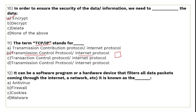A firewall can be a software program or a hardware device that filters all data packets coming through the internet. It checks all incoming data and ensures there is no suspicious data, malware, etc. You can install a firewall as a software program or as a hardware device.